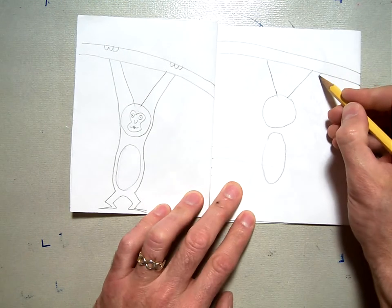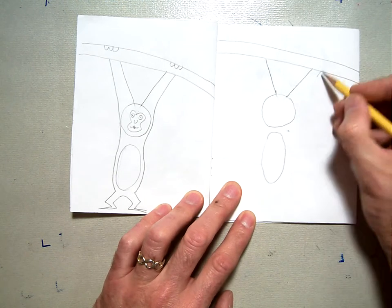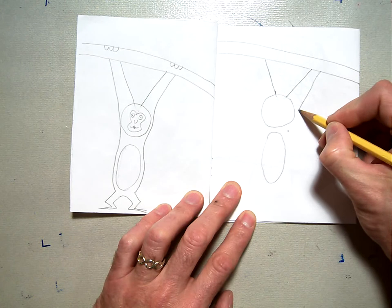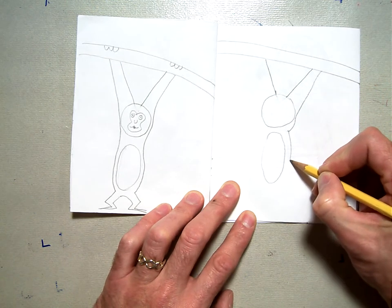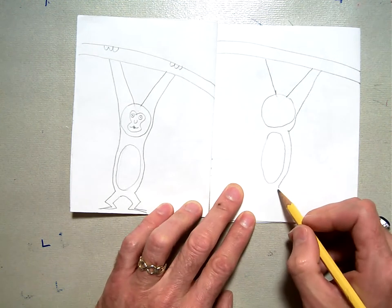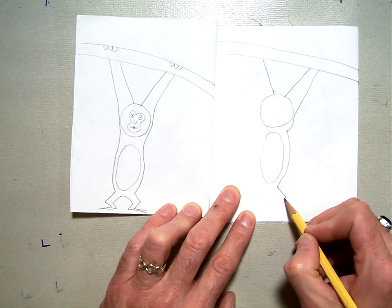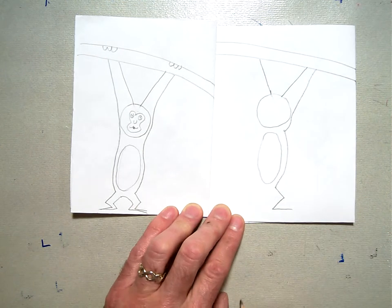You're going to start here. You're going to kind of angle right towards this area right here and kind of angle and then swoop in around. Curve it around his belly. And then once you get down to the bottom you're going to do a zigzag. Zigzag out, zigzag back in and then straight out like that for his foot.